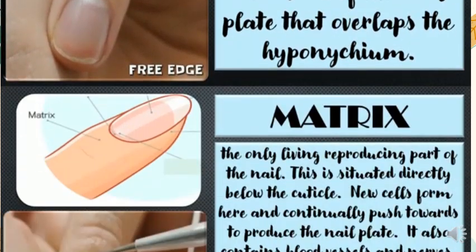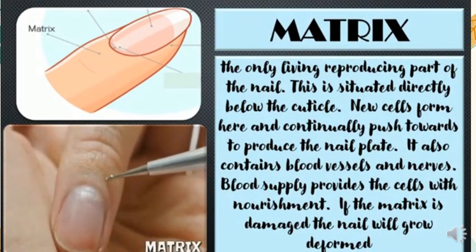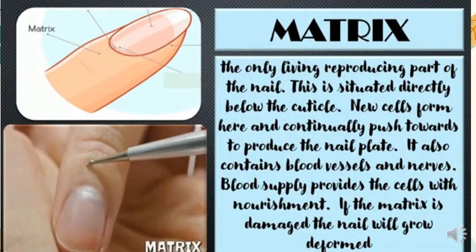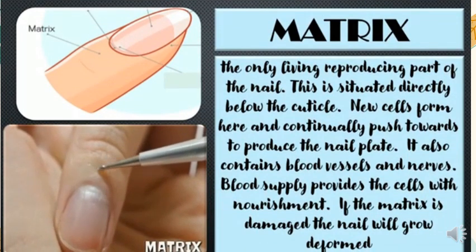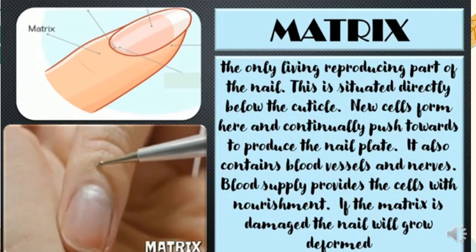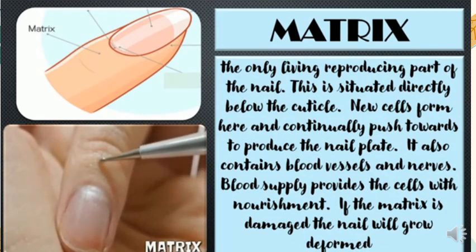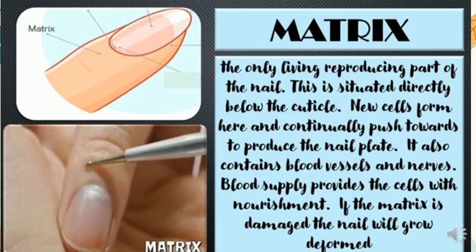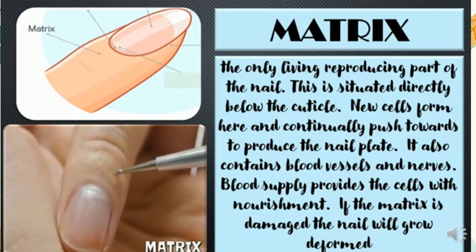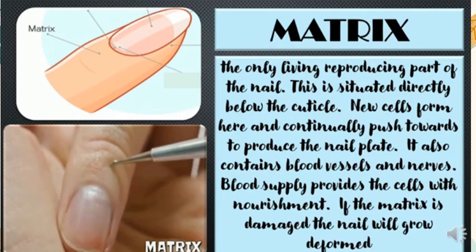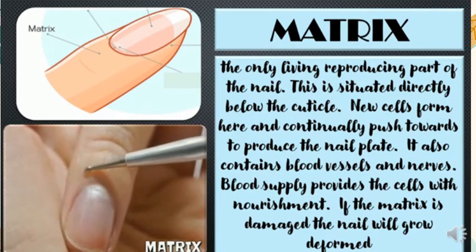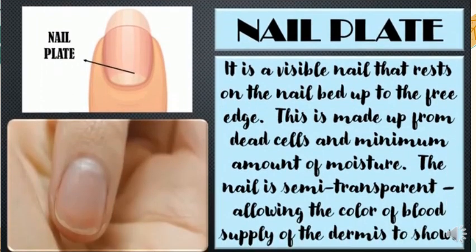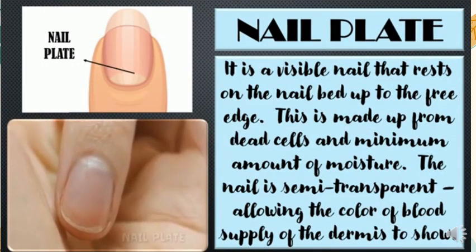Matrix — the only living, reproducing part of the nail. This is situated directly below the cuticle. New cells form here and continually push forward to produce the nail plate. It also contains blood vessels and nerves. Blood supply provides the cells with nourishment. If the matrix is damaged, the nail will grow deformed.